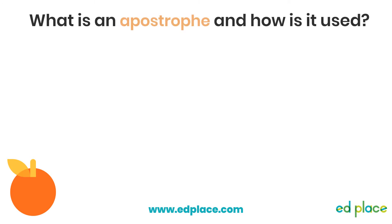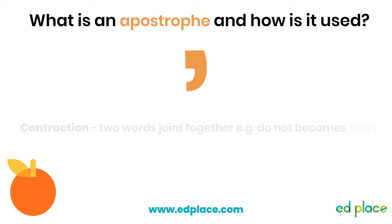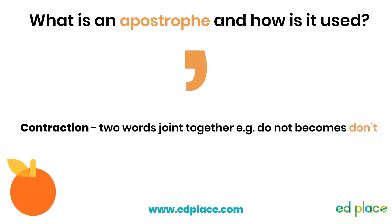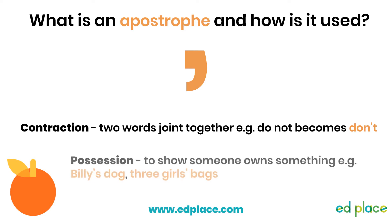To get us started, what actually is an apostrophe and how is it used? This is what an apostrophe looks like — it's a bit like a comma, but it hangs in the air rather than sitting on the line. Apostrophes are used to show contraction, which is when two words are joined together. For example, when 'do not' becomes 'don't'. It is also used to show possession — that someone owns something. For example, 'Billy's dog' tells us that Billy owns his dog, or 'the three girls' bags' shows us that the bags belong to three girls.